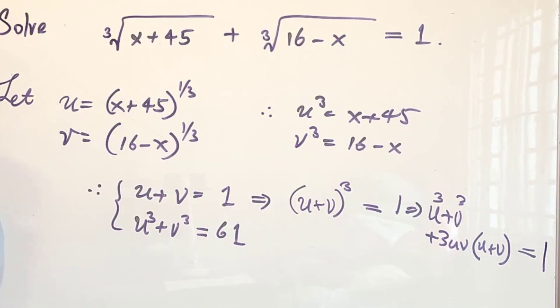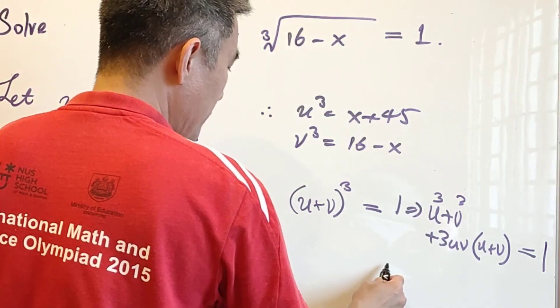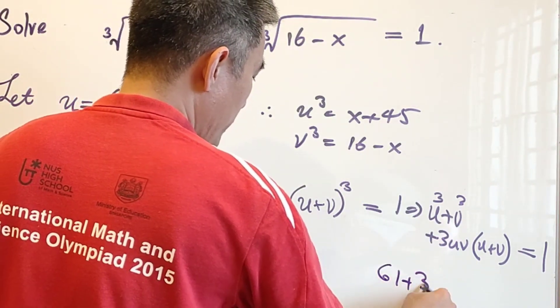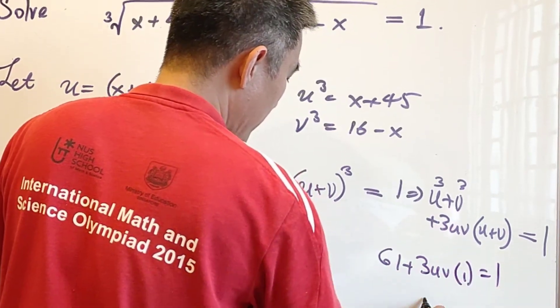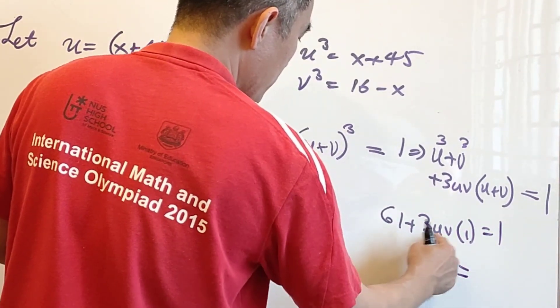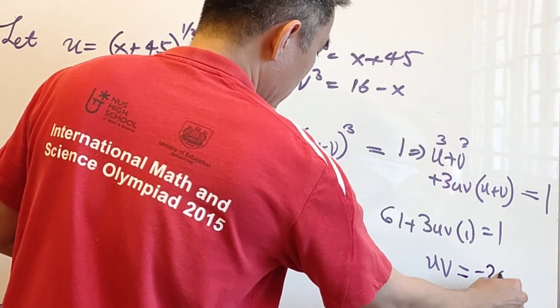And therefore, we will have 61 plus 3uv times 1 equals to 1, and therefore uv is equal to negative 20.